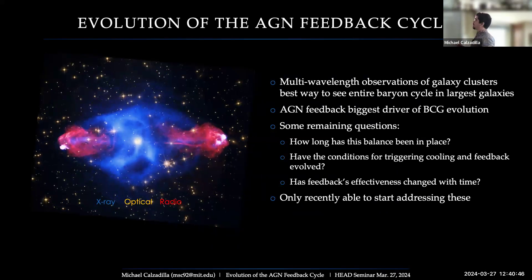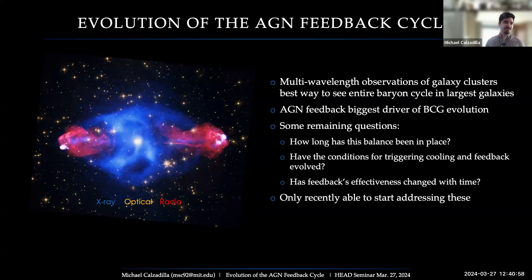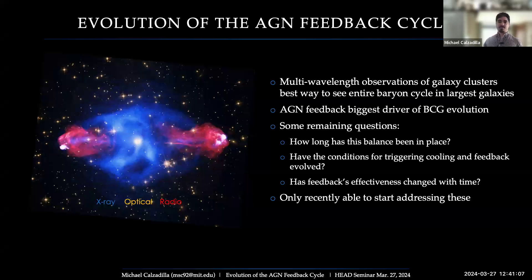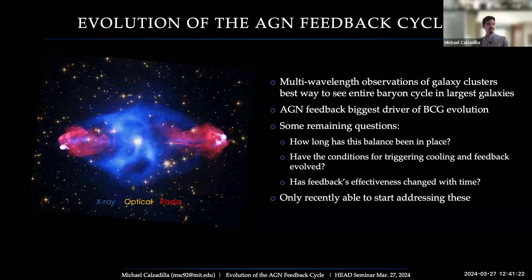Multi-wavelength observations of galaxy clusters give us a great way to see the entire baryon cycle at work in the largest galaxies. There's a large body of work now showing that AGN feedback is the biggest driver of BCG evolution and answers questions like the cooling flow problem. But remaining questions include: how long has this AGN feedback cycle been in place? How have the conditions for triggering cooling and feedback evolved over time? We've only recently been able to address these questions with large surveys probing to farther redshifts.